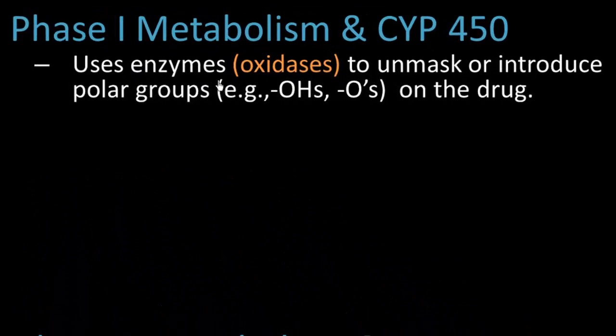The class of enzymes we use are called oxidases. What do these oxidases do? They unmask or introduce polar groups—examples being O's and OH's, hence the term oxidases—and they unmask these polar groups on the drug. We're going to draw out this reaction so you can see it and understand it.